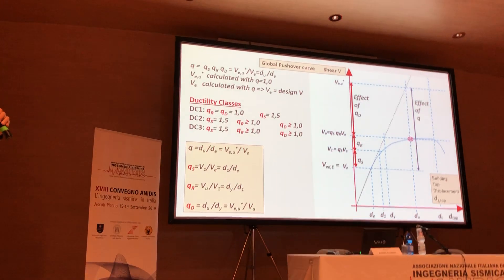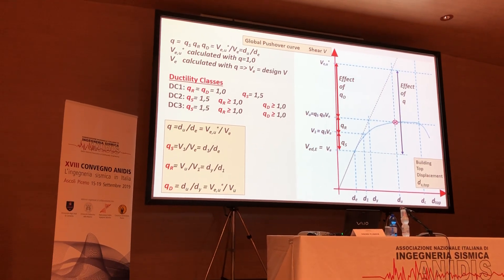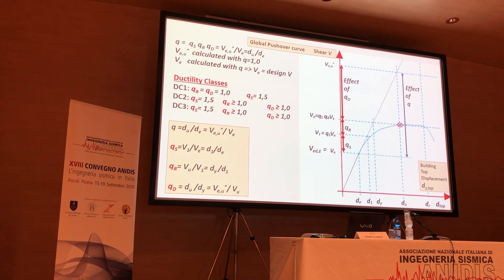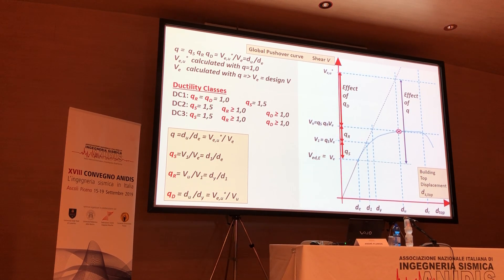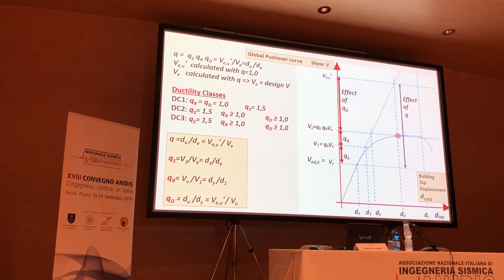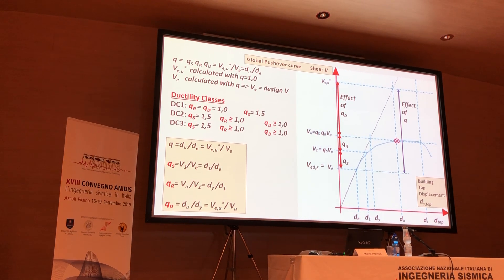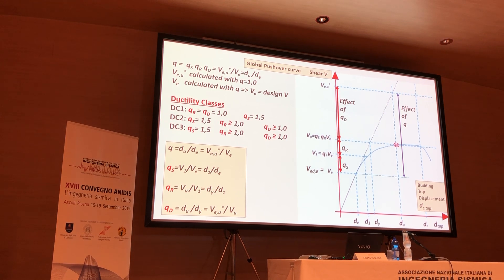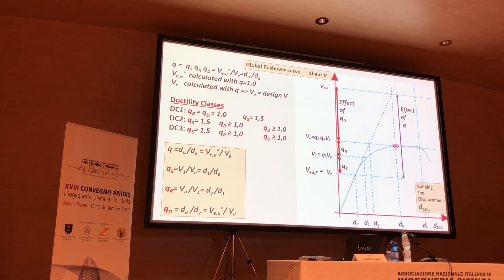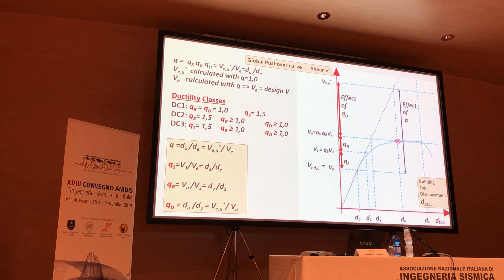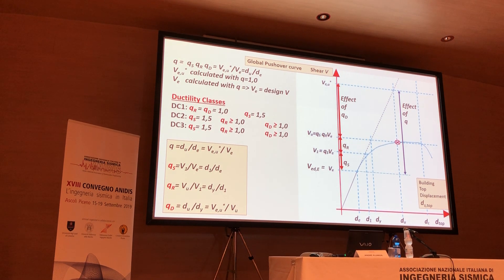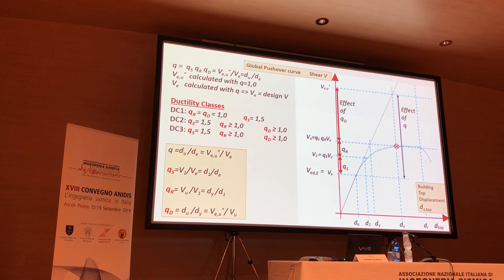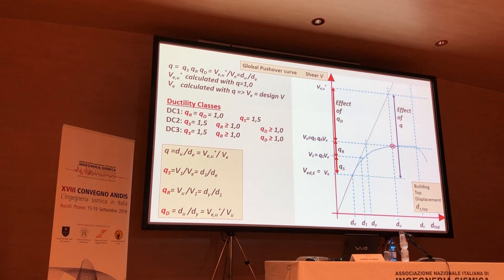On the pushover curve, qs moves from the design value to the end of elastic behavior; qr represents the redistribution effect up to maximum load pu; and qd represents what is gained beyond that. For DC1: qr = qd = 1.0, qs = 1.5. For DC2: qs = 1.5, qr and qd may be greater than 1. The same applies in DC3.